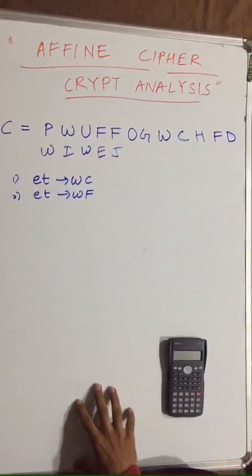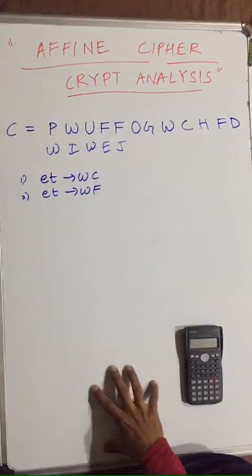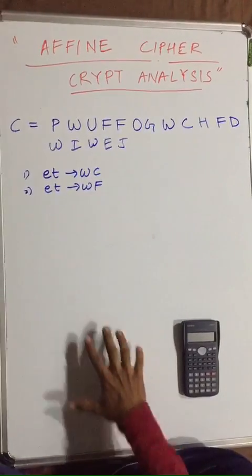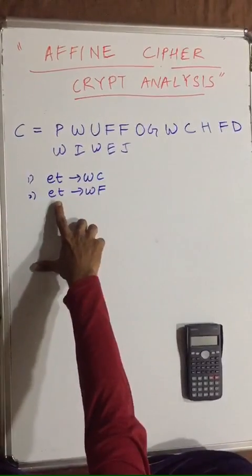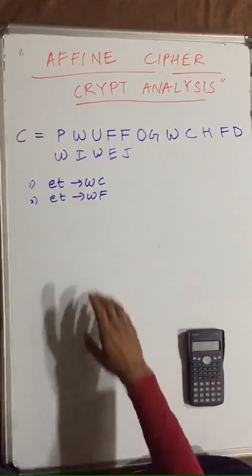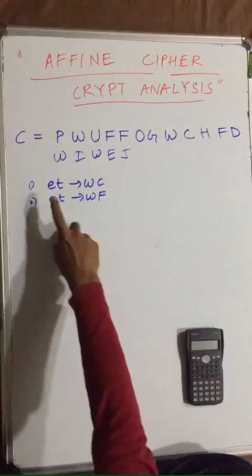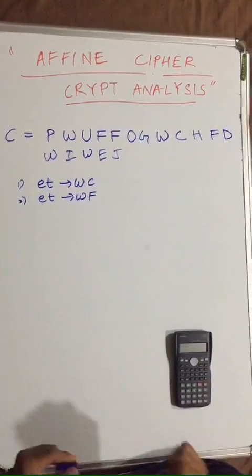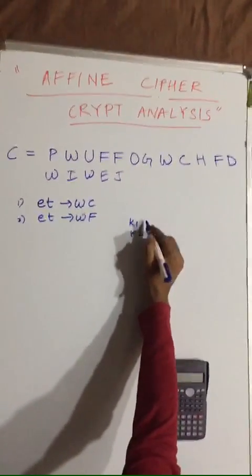Hello friends, in this lecture I'm going to teach you about cryptanalysis on affine cipher. The intruder has chosen two plaintexts 'et' and has generated two ciphertexts 'wc' and 'wf'. So as you can see, for 'et' there are two probabilities: 'et' for 'wc' and 'et' for 'wf'. We have to find keys k1 and k2.